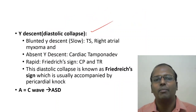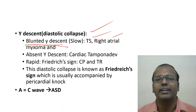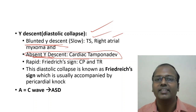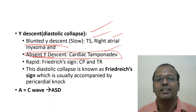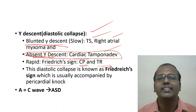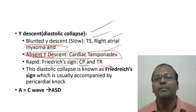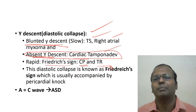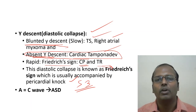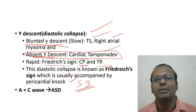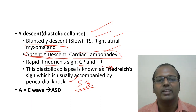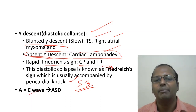Y descent (diastolic collapse) is blunted in tricuspid stenosis or right atrial myxoma due to obstruction of passive right ventricular filling. Absent y descent is characteristically seen in cardiac tamponade. Rapid prominent y descent occurs in constrictive pericarditis — also called Friedreich's sign — because early right ventricular filling is unaffected and brisk, but suddenly stops (producing the pericardial knock), creating a deep y descent. Equal amplitude a and c waves are associated with ASD (MCQ point).